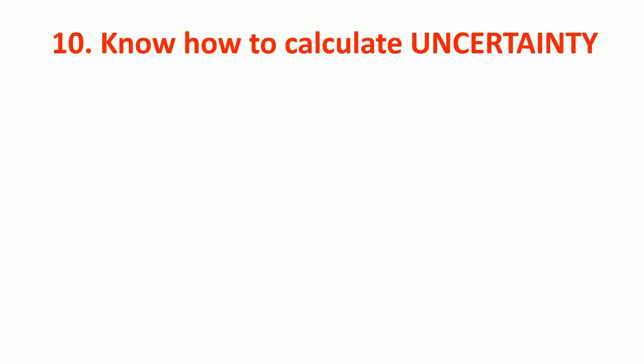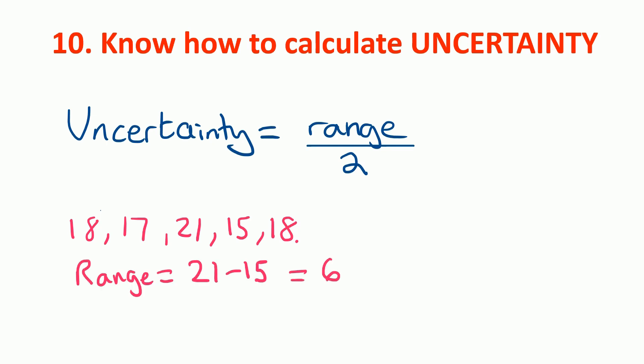So at number 10 we have know how to calculate the uncertainty in a set of results. The uncertainty is the range divided by 2. So if this was a set of results, then the range is the highest take away the lowest. In this case it's 21 take away 15, which is 6. And then for the uncertainty we divide that by 2, so we get 3. And sometimes the examiner might want you to round up to the nearest whole number.